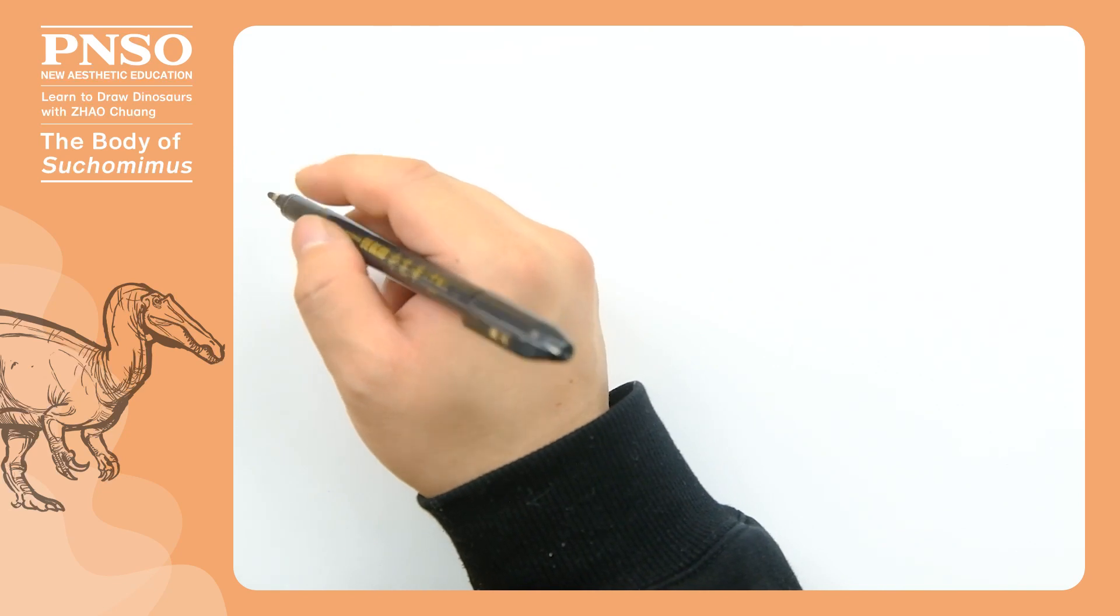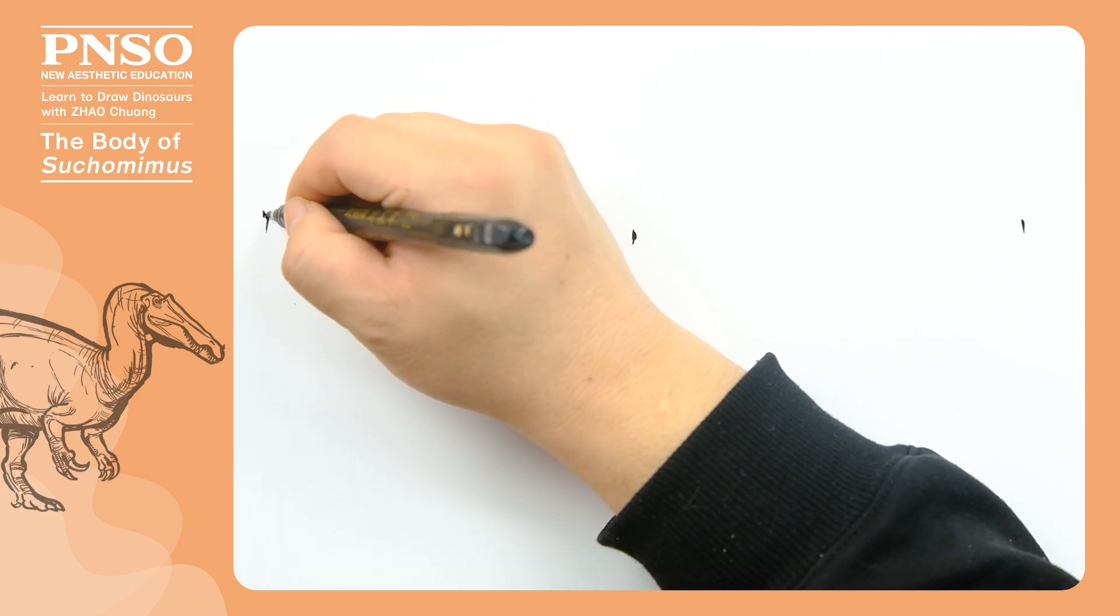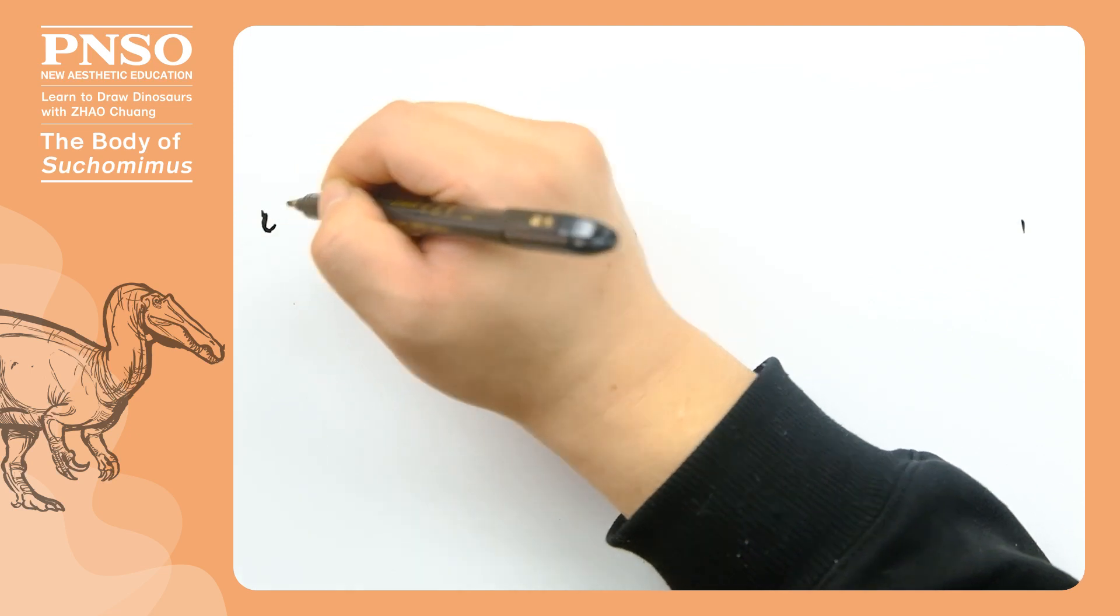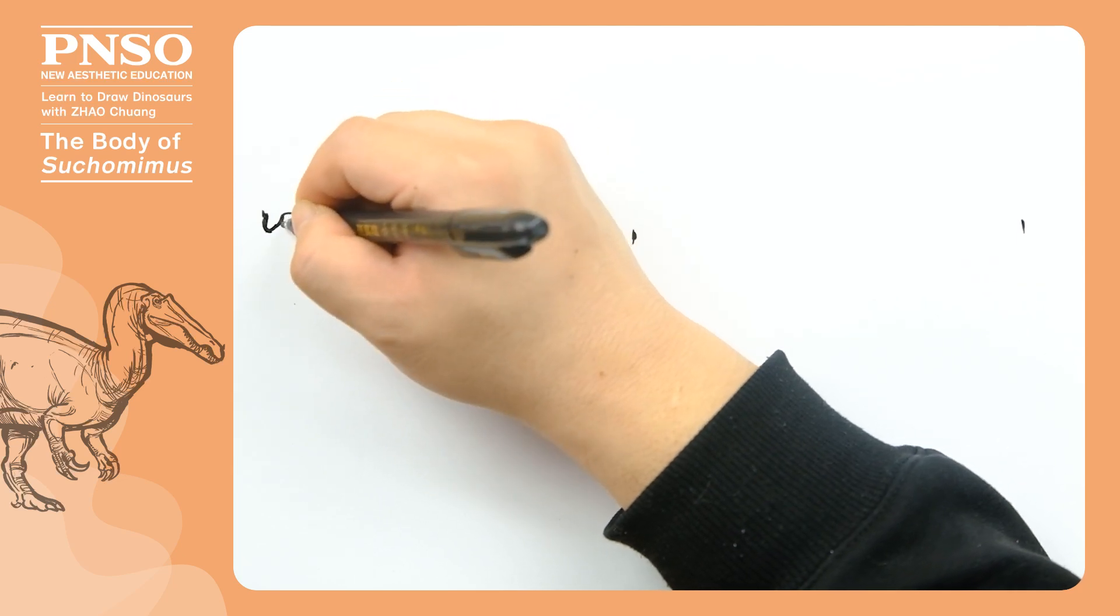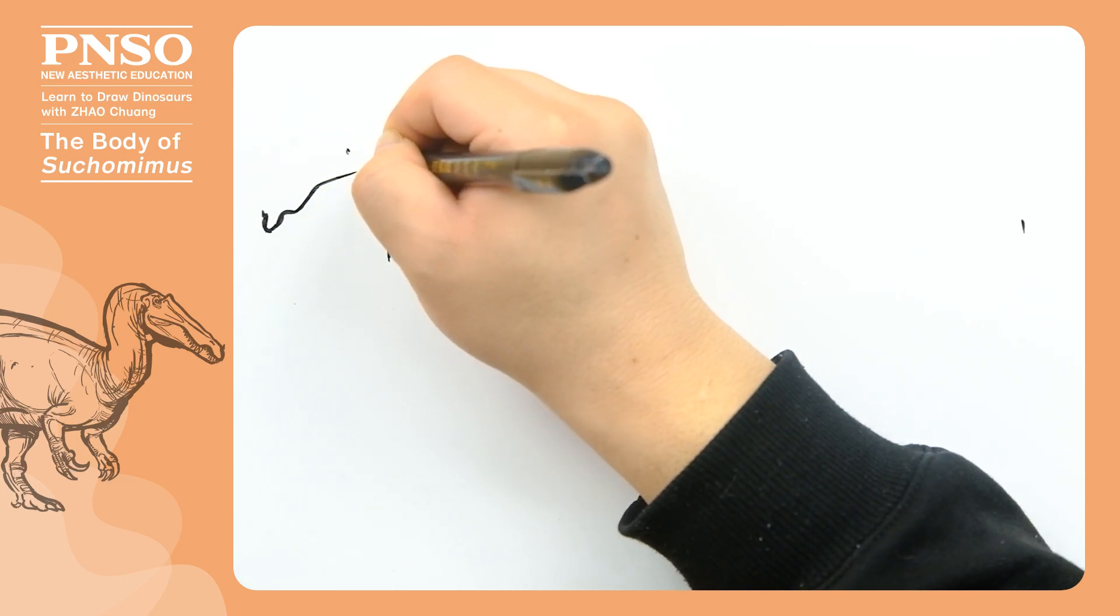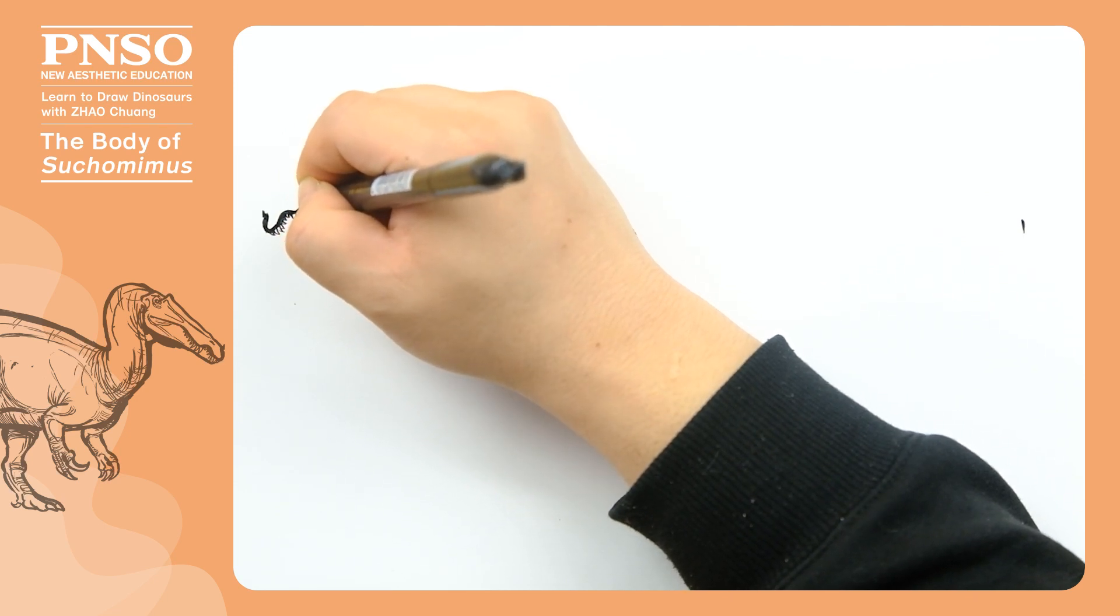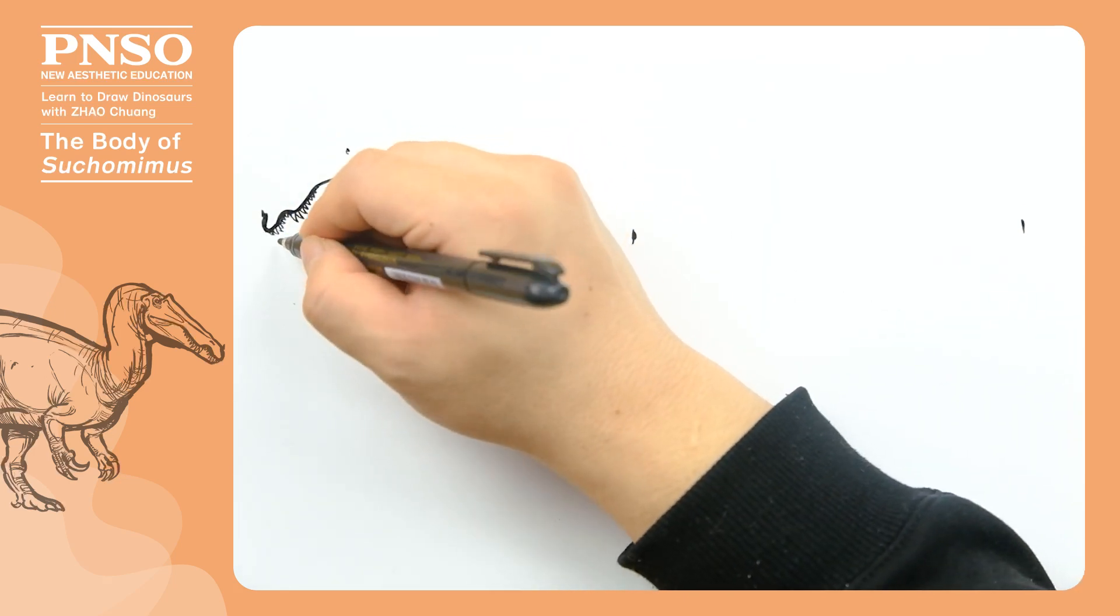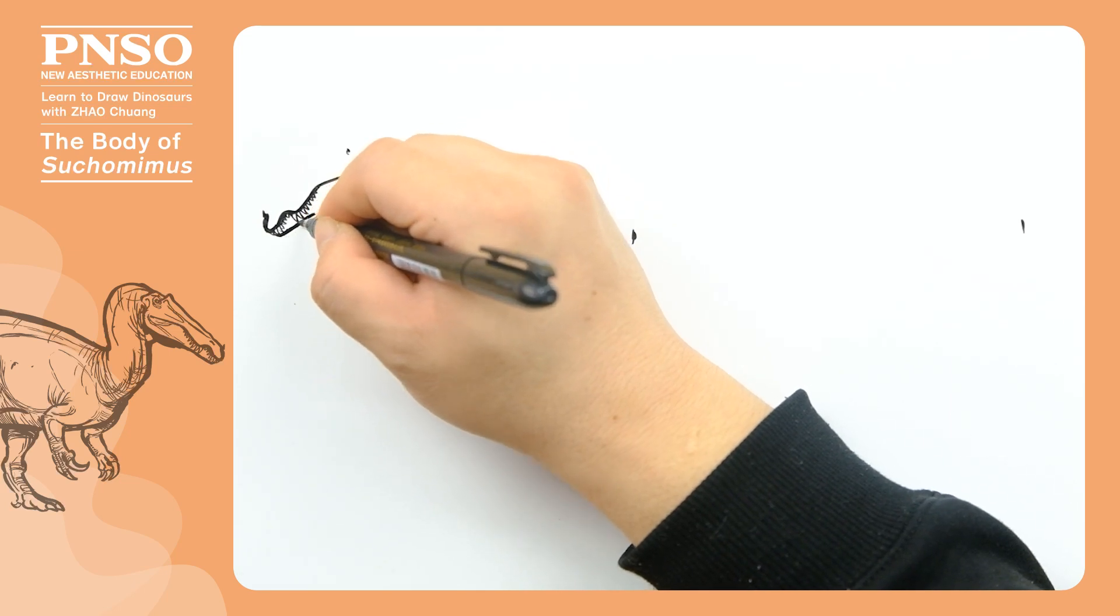We first determine the position of each body part in the picture, and then start drawing from its mouth. When drawing the upper jaw, pay attention to the position of the gap in its mouth. And then draw its upper teeth. Since we are going to draw this Suchomimus with its mouth closed, its lower jaw will be encased within its upper jaw.